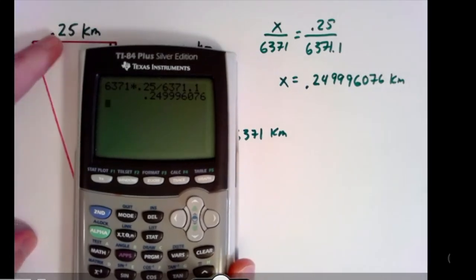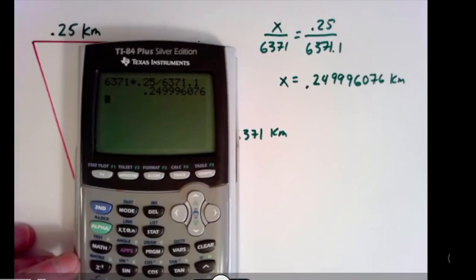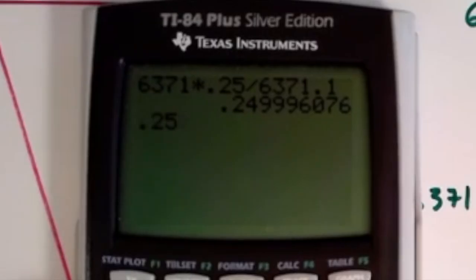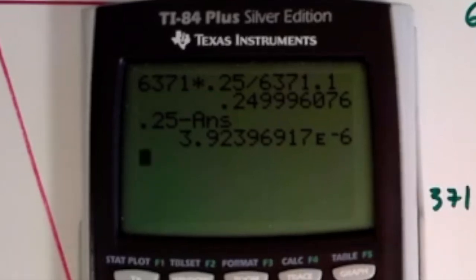And the original length was 0.25. So to find out how much it's off by, we're going to do the subtraction. So we'll do 0.25 minus this result. And we get this number here. So this is how many kilometers off it's going to be from being perfectly vertical.